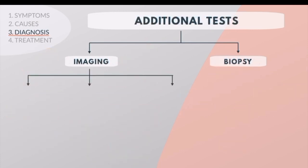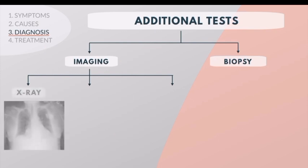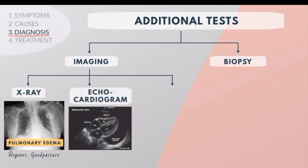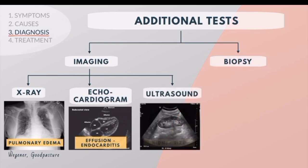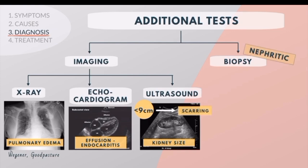Additional useful tests depend on patient history and physical examination. A chest X-ray can suggest pulmonary edema and is also relevant in Goodpasture's disease. An echocardiogram may identify cardiac effusion and endocarditis. A renal ultrasound is frequently obtained in cases of decreased GFR in order to evaluate kidney size; a kidney size less than 9 cm may suggest chronic scarring.